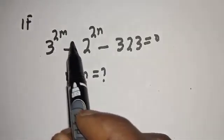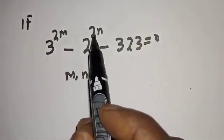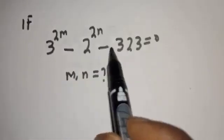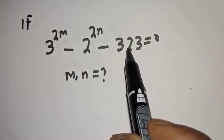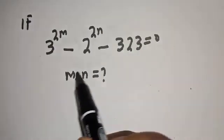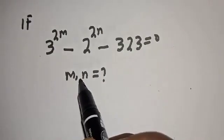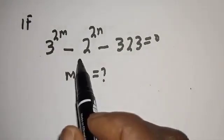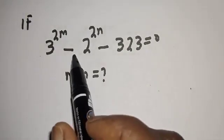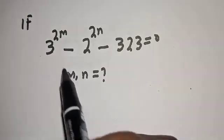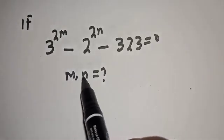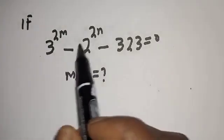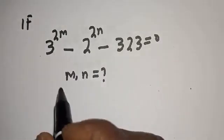If 3 raised to power 2m minus 2 raised to power 2n minus 323 is equal to 0, what is the value of m and n? Hi everyone, welcome to my class. In this class, I want to find the value of m and n from this equation.